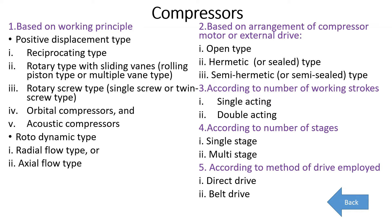Why is a compressor required in vapor compression refrigeration system? The compressor compresses vapor refrigerant coming from the evaporator, which is at low pressure and low temperature, to high pressure and high temperature vapor. This is required so that there is circulation of refrigerant in the cycle. Once the vapor is compressed, that heat is rejected in the condenser. So whatever heat is picked up in the evaporator is rejected in the condenser.